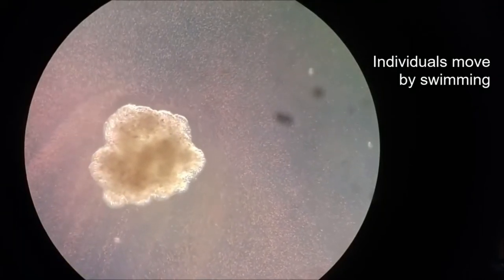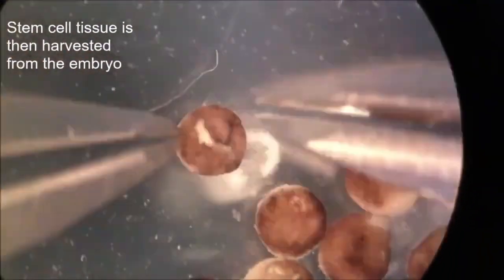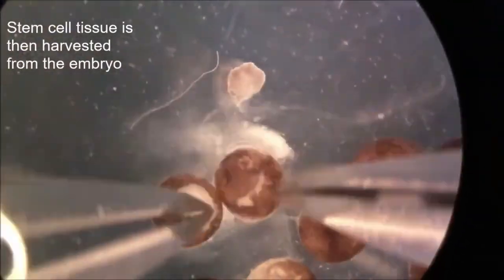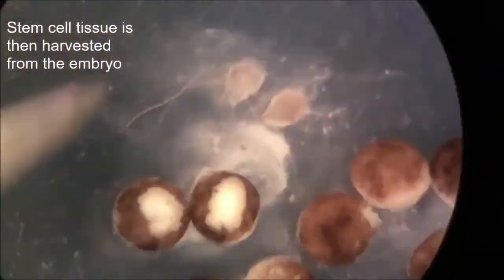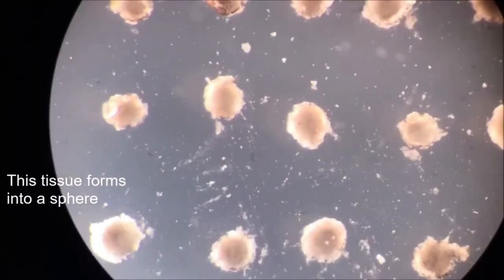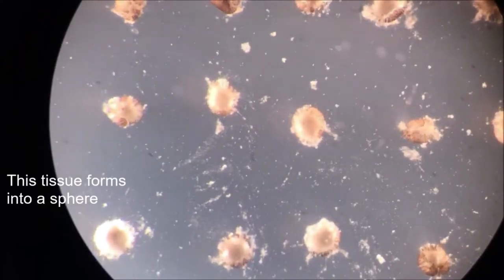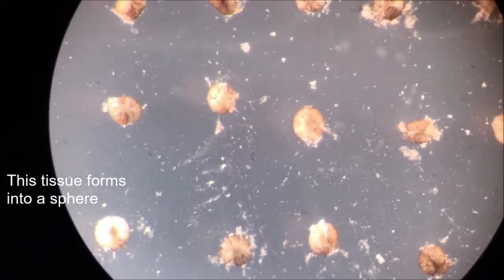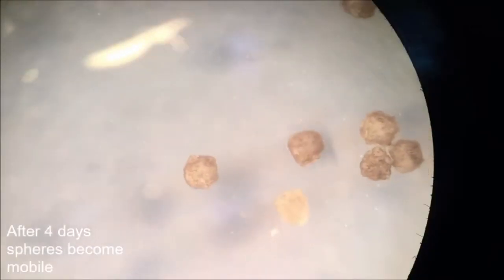These xenobots were first born when scientists extracted skin stem cells from frog embryos. On their own, the cells clumped together with the outer cells developing cilia. This allowed the clumps to move, making random piles of particles within their environment. These piles of cells they created on their own were actually new functioning xenobots.